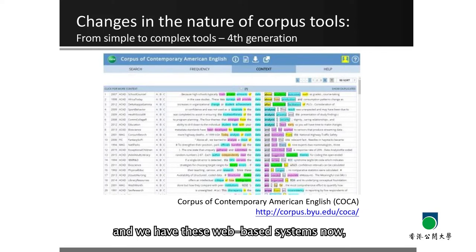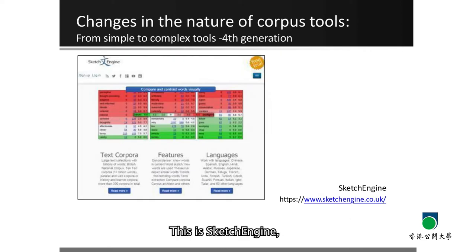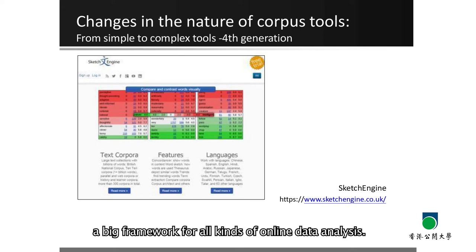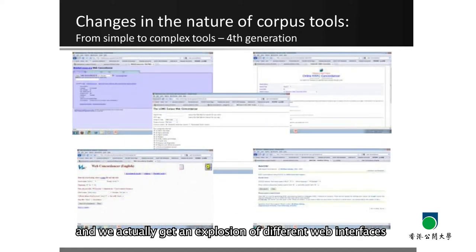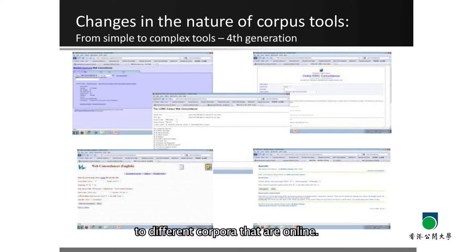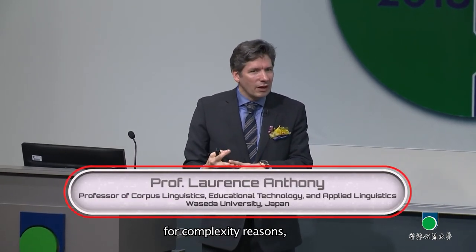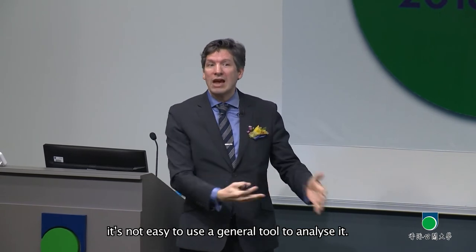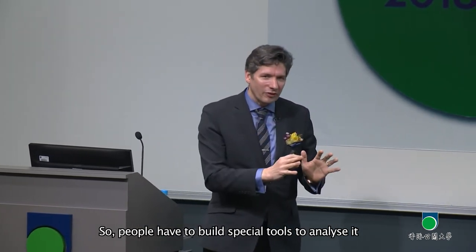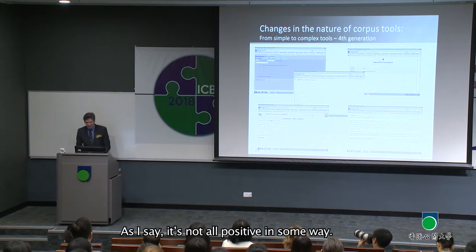Then we get to the fourth generation, where we're kind of back on a server in a mainframe system. We have web-based systems now — we don't have the data locally; we go online and access this data. That's COCA — Corpus of Contemporary American English. This is Sketch Engine, a big framework for all kinds of online data analysis. We've got Lancaster University's CQPweb, and an explosion of different web interfaces to corpora that are online — for copyright reasons, speed reasons, and complexity reasons. As the data becomes more annotated and carefully constructed, it's not easy to use a general tool to analyze it, so people have to build special tools to analyze it in particular ways.